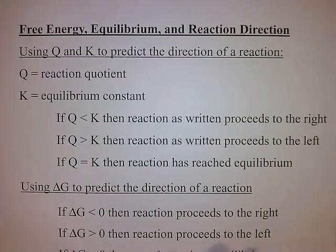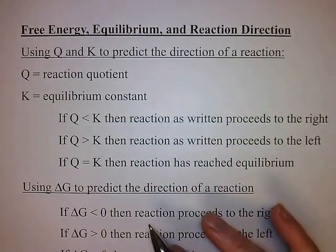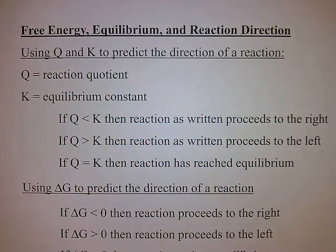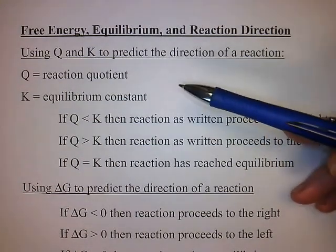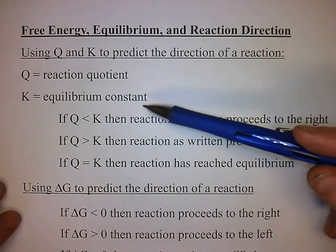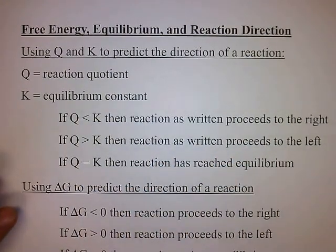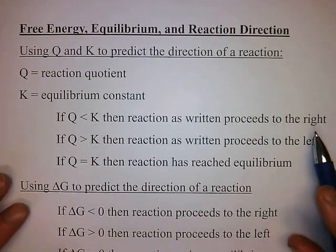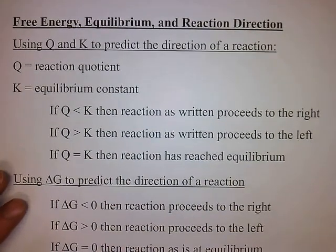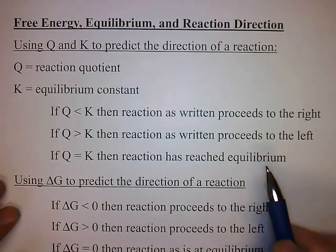Something else we can do with the free energy change is calculate the equilibrium constant for a reaction. First, compare equilibrium constant to free energy change. Previously, we talked about how you can use Q and K to predict the direction of a reaction, where Q is the reaction quotient from actual concentrations and K is the equilibrium constant. If Q is less than K, the reaction shifts to the right; if Q is bigger than K, it shifts to the left; if Q equals K, the reaction is at equilibrium.